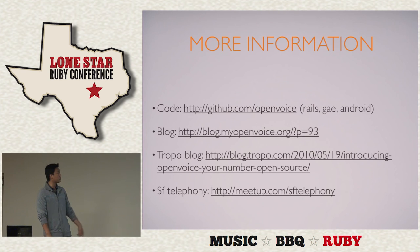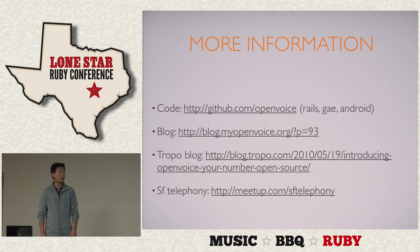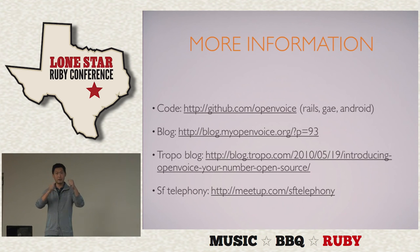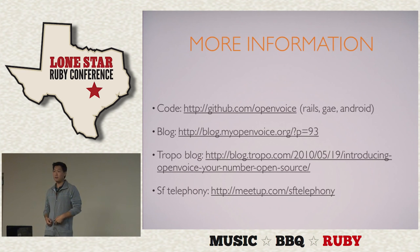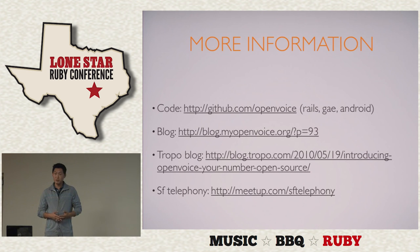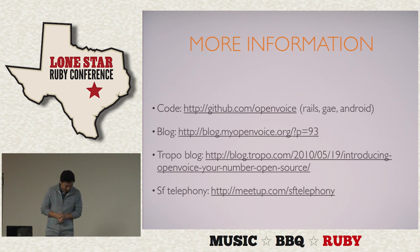For more information, the most important resource is the Open Voice GitHub account where you can find the Rails app, the Google App Engine port, and the Android client. If you create an Open Voice account and download the Android client, there's a barcode in the download section — just scan it and it downloads directly to your phone. It's not in the market. There are also a couple of blog posts from back in May when we announced it. I also hold a SF VoIP meetup, so if you're in the area, come hang out — there are speakers, pizza, and beer.